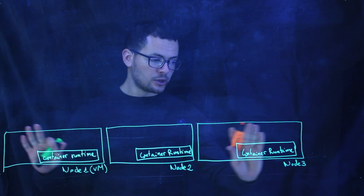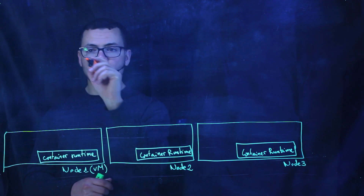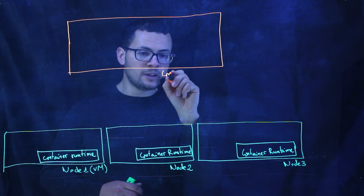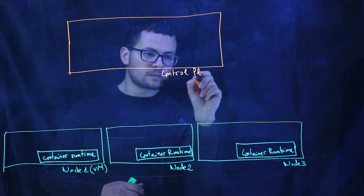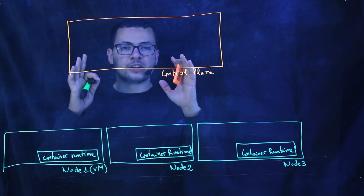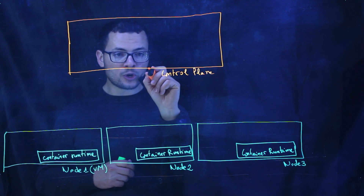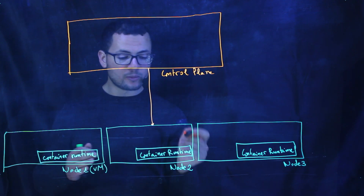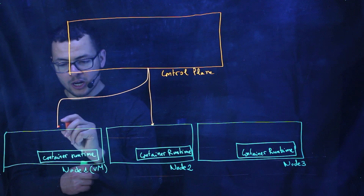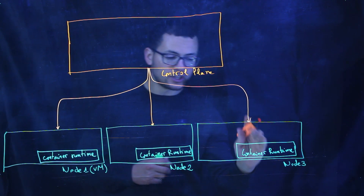On top of those nodes or virtual machines, we'll have another component — the control plane. Let's draw that here. The control plane is actually the brain of Kubernetes. Here is where all the main Kubernetes components are installed. The role of the control plane is to control which container will run on which nodes. It knows where my nodes are and it will issue commands to deploy different containers inside those nodes.